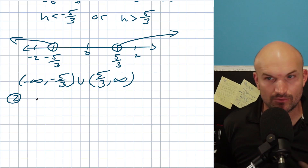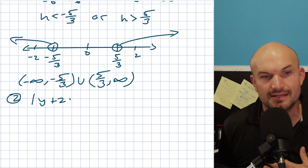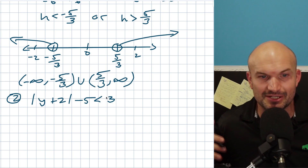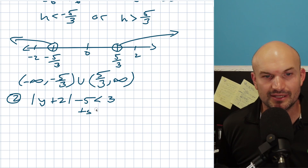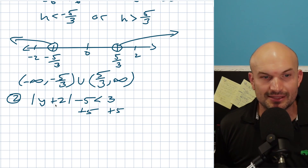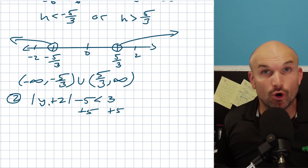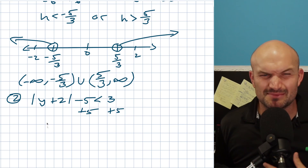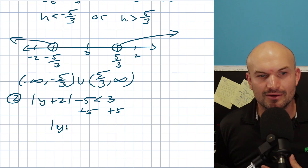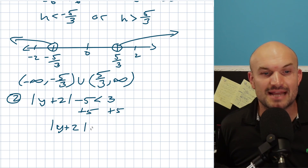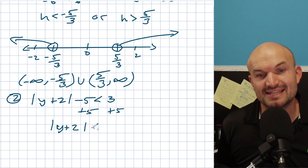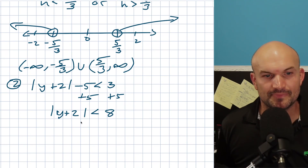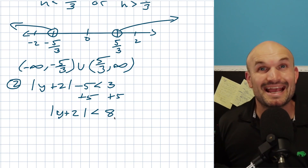What about if we have operations both inside and outside the absolute value? It's really important to use your order of operations — we've got to isolate the absolute value. The only way to get rid of the absolute value is to create those two cases. So add five to both sides first. The absolute value of Y plus two is less than or equal to eight. When we have less than or equal to, that is now going to be an AND inequality.